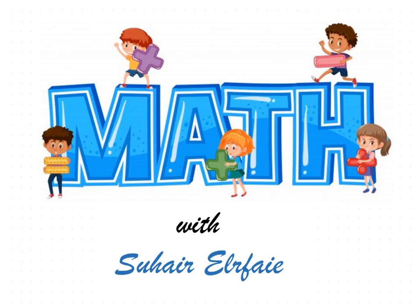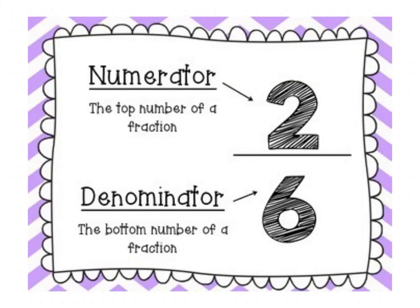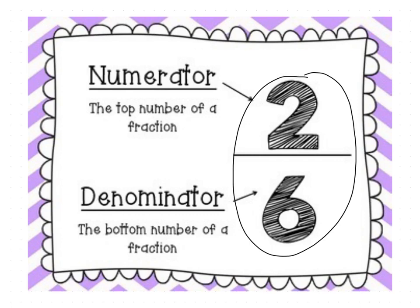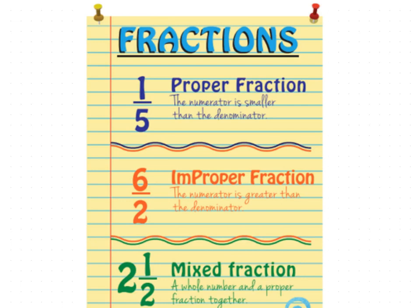Today we are going to learn how to convert mixed numbers into an improper fraction. But first, let's revise some topics together. We have a fraction here — the top number of the fraction is called the numerator and the bottom number is called the denominator.